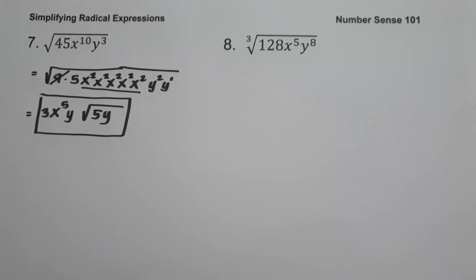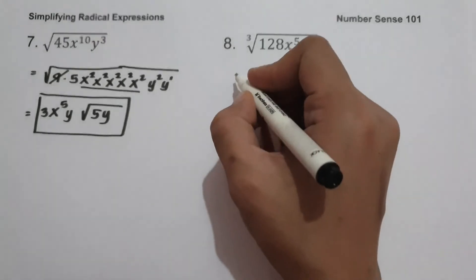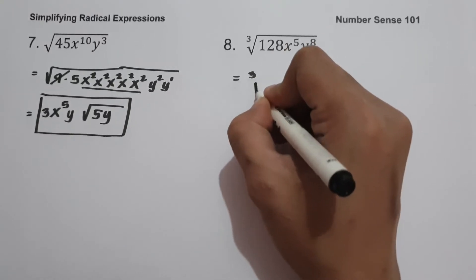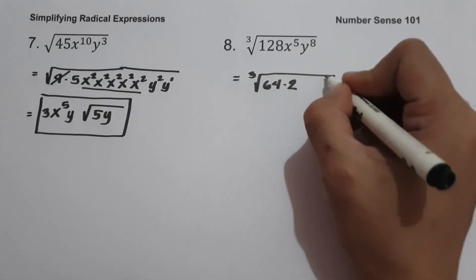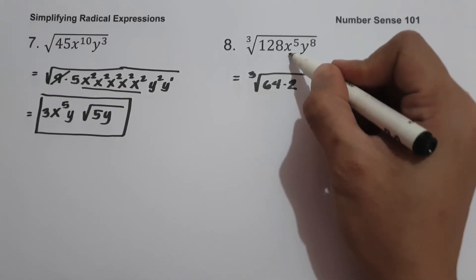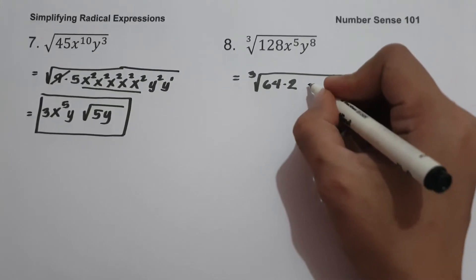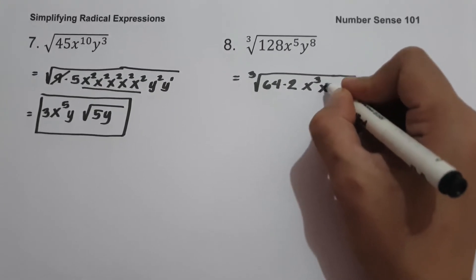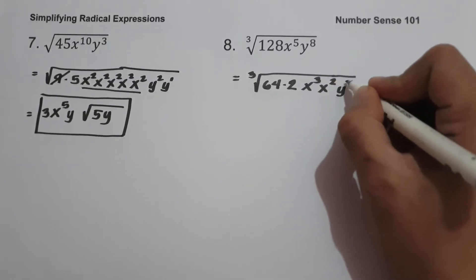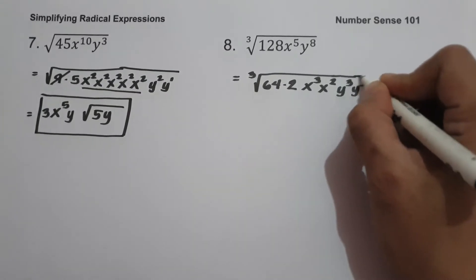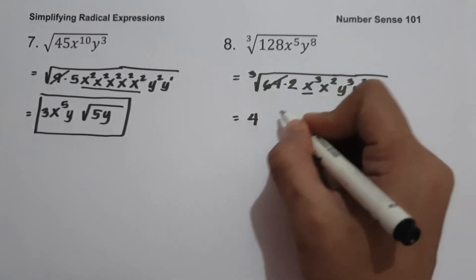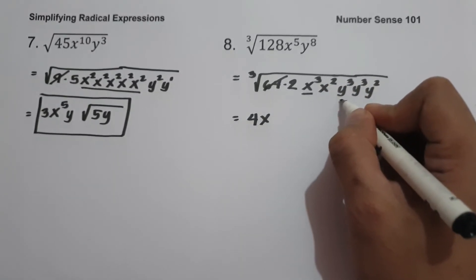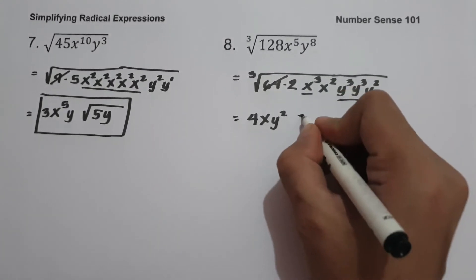On example number 8, we have cube root of 128x raised to 5, y raised to 8. To simplify, we find the factors of 128 where one factor is a perfect cube. The factors are 64 and 2, and 64 is a perfect cube. Then we divide the exponents of x and y by 3 because our index is 3. For x raised to 5: x cubed and x squared. For y raised to 8: y cubed, y cubed, and y squared. The cube root of 64 is 4, x cubed gives x, and 2 y-cubed terms give y squared.